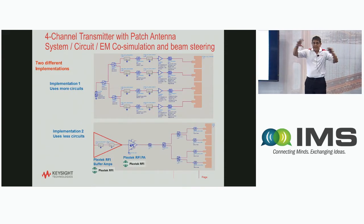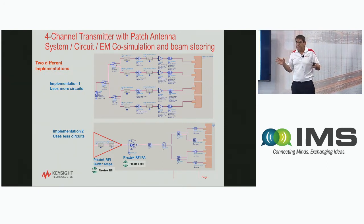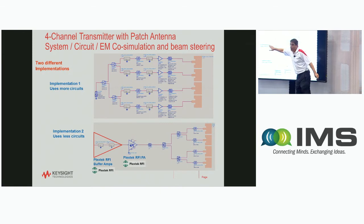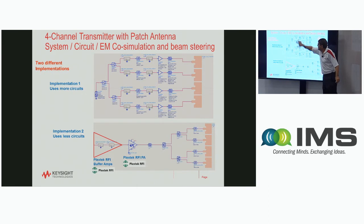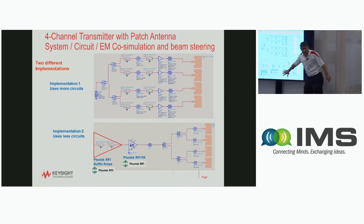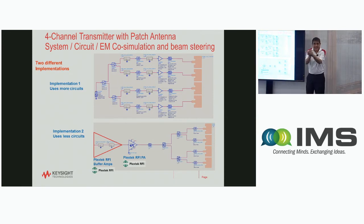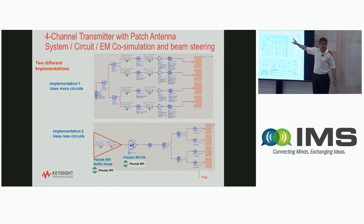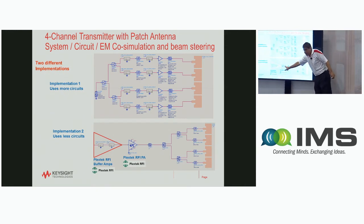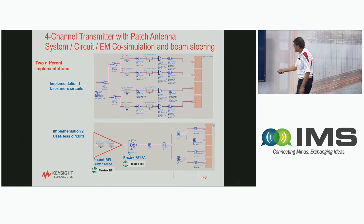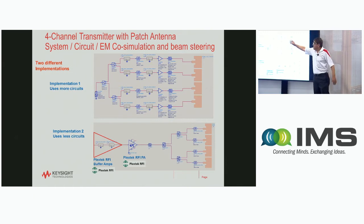Before showing the whole system simulating together, there's a trade-off analysis at the system level for how to construct the system. Implementation number one uses more circuits — eight preamps and four power amplifiers feeding to the antenna. The second implementation has fewer circuits, with the phase shifter feeding the antenna. Although the first has more circuits, the 28 dBm power from the power amplifier is right next to the antenna, so you get more power. In the second, you lose power through the divider and phase shifter — so unless you have enough power and want fewer circuits, the first implementation gives higher output power.